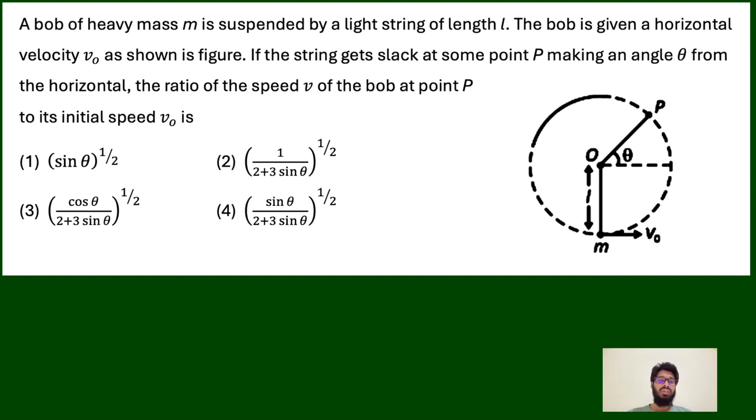Hello students, welcome to our channel Success Achievers. Today we are going to solve one question from NEET 2025. A bob of heavy mass m is suspended by a light string of length L. The bob is given a horizontal velocity V0 as shown in this figure. If the string gets slack at some point P making an angle theta from the horizontal...